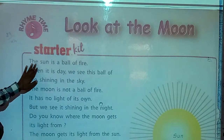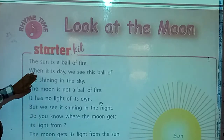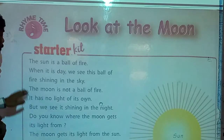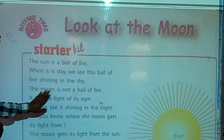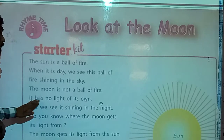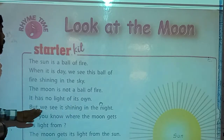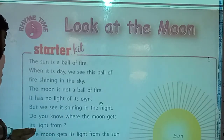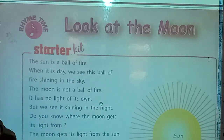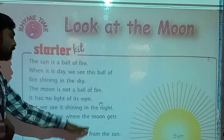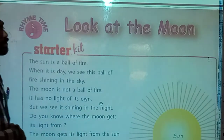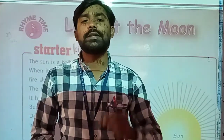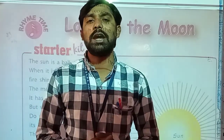The sun is the ball of fire. When it is lit, we see this ball of fire shining in the sky. The moon is not a ball of fire. It has no light of its own, but we see it shining in the night. Do you know where the moon gets its light from? The moon gets its light from the sun. Here in the starter cave, information is given to us about the sun and the moon.